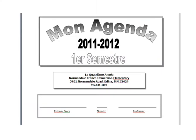So this is what the Agenda looks like — Mon Agenda. Normally your child should have their name here, their number in the classroom, and the name of their teacher.